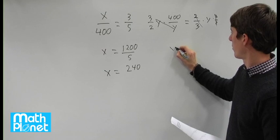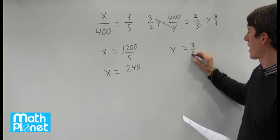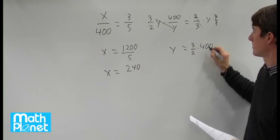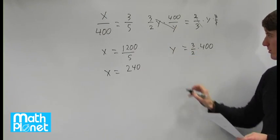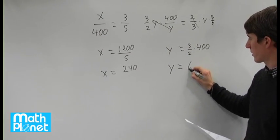So now we just have y is equal to 3 halves times 400. And 3 halves times 400 gives us 600.